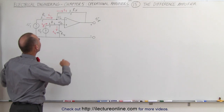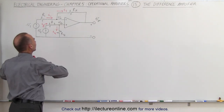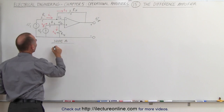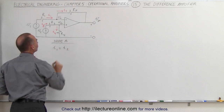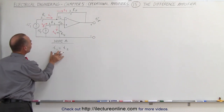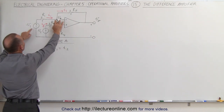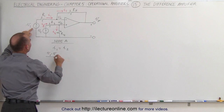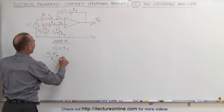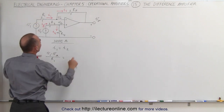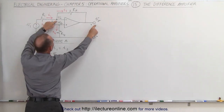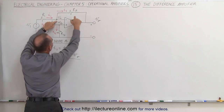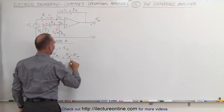First, we're going to take the current in and out of node A. We can say that I1 entering the node equals I2 leaving the node. I1 can be calculated by taking the voltage difference V1 minus VA divided by the resistance R1, and that equals the difference between VO and VA, which is VA minus VO divided by the feedback resistor RF.